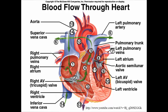Blood flow through the heart must be learned thoroughly. Blood comes back to the heart into the right atrium. From the right atrium, it passes through the right AV valve and enters the right ventricle. From there, blood leaves through the pulmonary semilunar valve into the pulmonary trunk, then out via the left pulmonary artery to the left lung and the right pulmonary artery to the right lung, where it gets oxygenated.